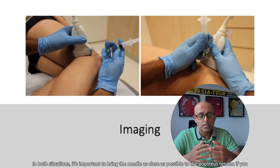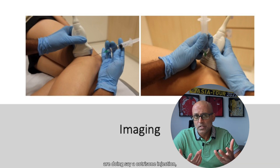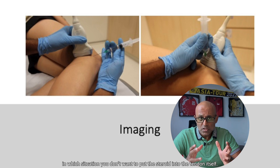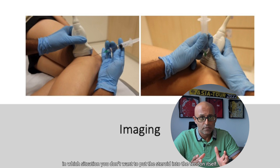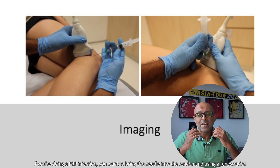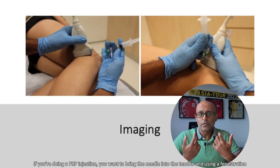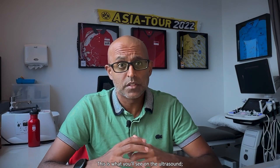In both situations, it's important to bring the needle as close as possible to the popliteus tendon. If you are doing a cortisone injection, you don't want to put the steroid into the tendon itself. Or if you are doing a PRP injection, you want to bring the needle into the tendon and, using a fenestration technique, distribute the PRP into the tendon itself. And this is what you will see on the ultrasound.